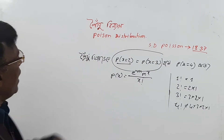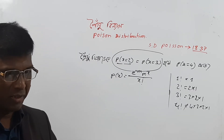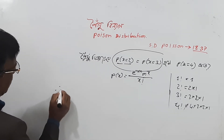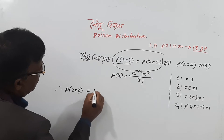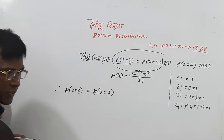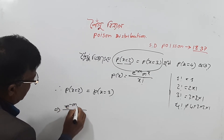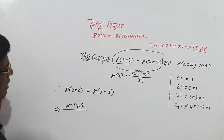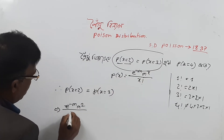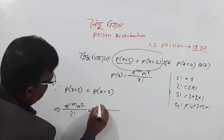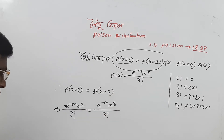So now we have X = 2, 0. We have written a formula for X = 3, so we use the formula: e to the power minus m, m power 2, divided by 2 factorial. What do we do for X = 3? E to the power minus m, m power 3, divided by 3 factorial.